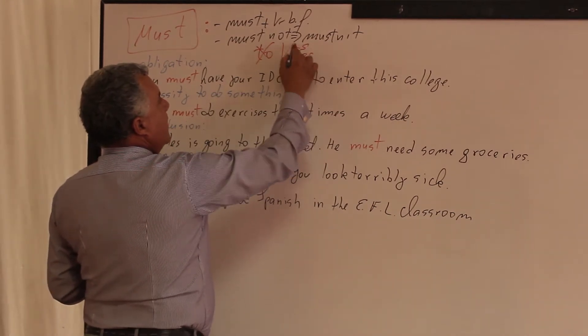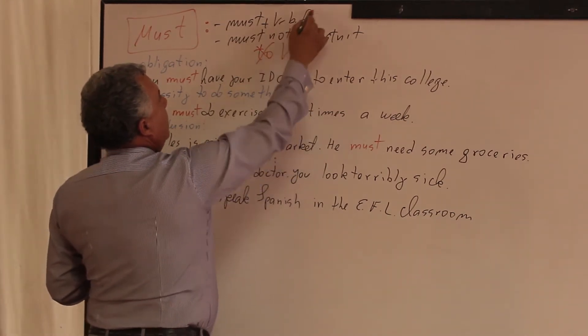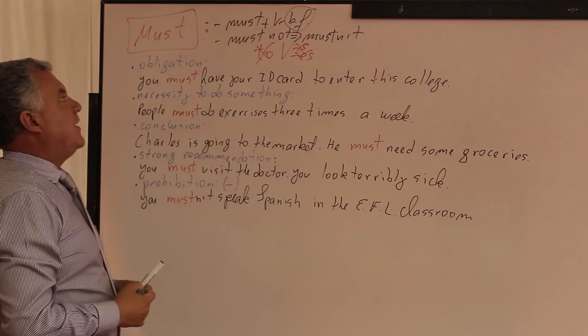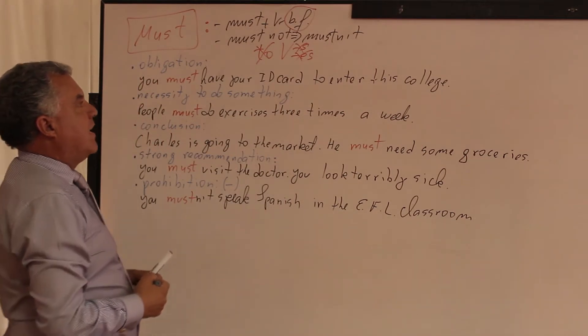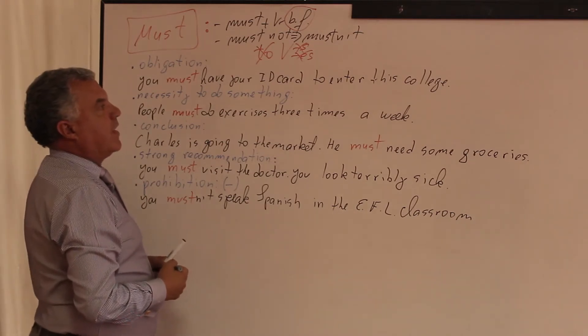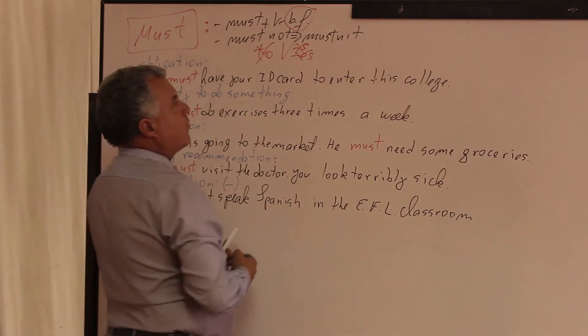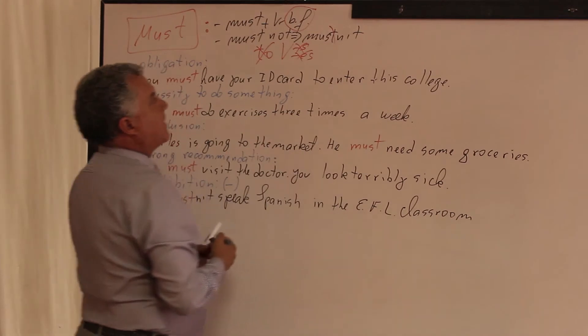The negative is must not. The contraction is mustn't, but in this case you don't pronounce the first t. Mustn't.